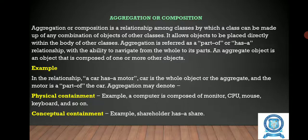First, let us know about aggregation or composition. The aggregation or composition is a relationship among the classes by which a class can be made up of any combination of objects of other classes. It allows the objects to be placed directly within the body of other classes. This aggregation is referred to as a 'part of' or 'has a' relationship, with the ability to navigate from a whole to its part. An aggregate object is an object that is composed of one or more other objects.